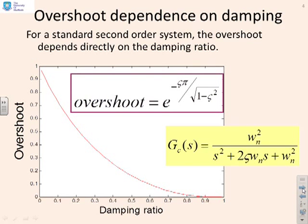Some reminders: what's the link between the overshoot for a step response and the damping ratio? In this graph, it tells you.